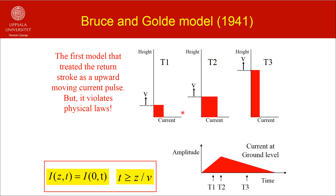That is, there is no way for the current along the whole channel to adjust instantaneously as time flows. The model of Bruce and Gold corrected the first deficiency by assuming that the return stroke travels upwards with finite speed. However, in the model it is assumed that at any given time the current along the return stroke channel is the same, changing as the current at the channel base varies with time. The current at any given point exists for times greater than z divided by v, where z is the height of the point of observation and v is the speed. Thus Bruce and Gold took into account the finite propagation speed of the return stroke.